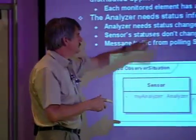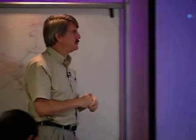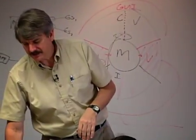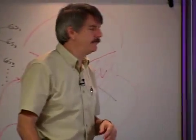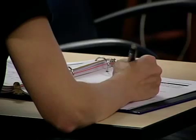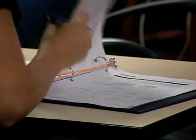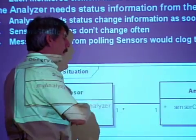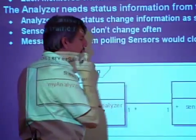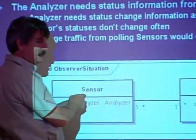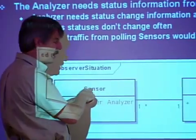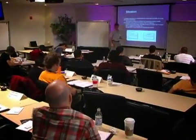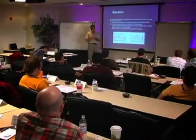The key here is the analyzer needs the status change information as soon as possible after it changes. Because these things don't change very often, and because polling would clog the network, rather than having the analyzer ask the sensor what its status is, I'm going to have the sensor say: when my status changes, go tell the analyzer. So I just sit here waiting.